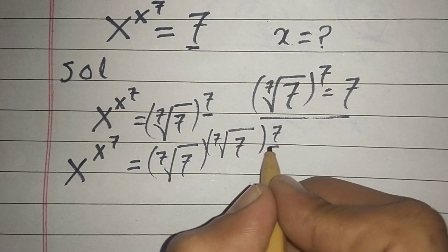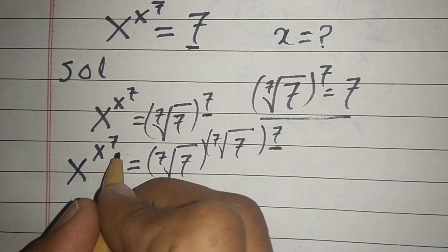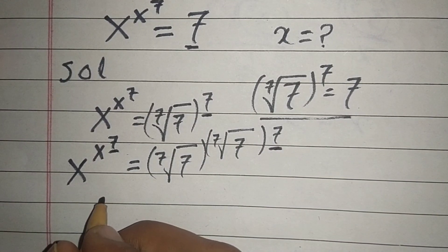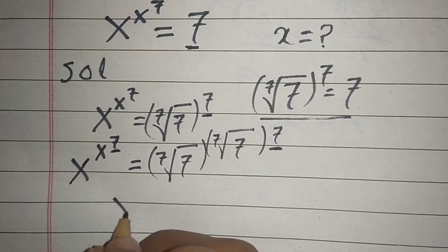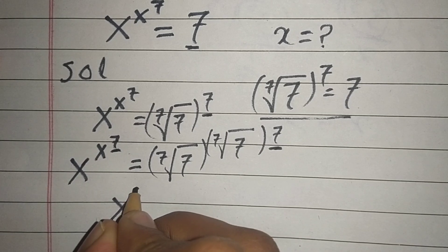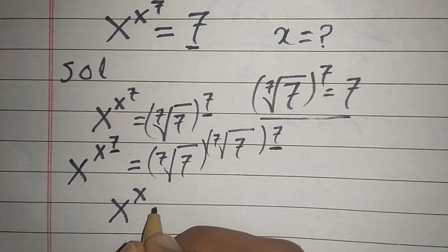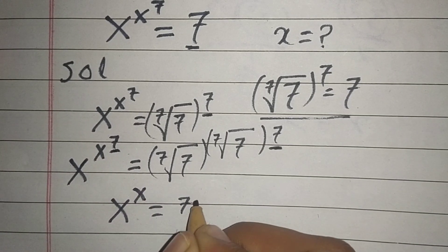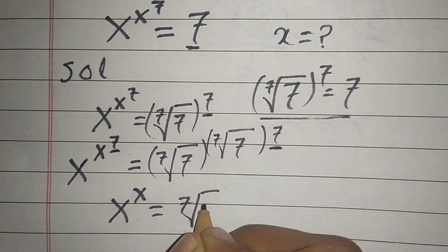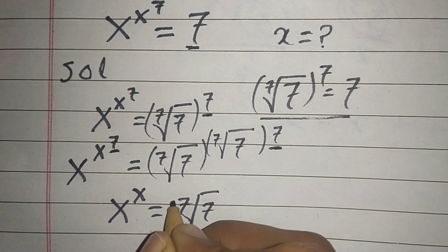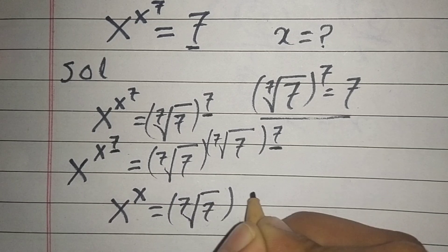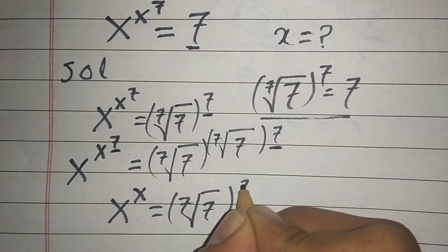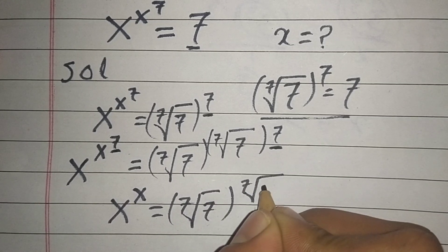Comparing both sides, we can see the base and exponent structure match. So we can write x^x = (7^(1/7))^(7^(1/7)).